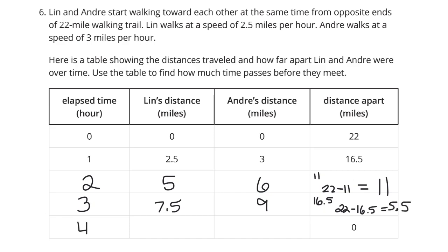And our fourth hour here happens to be our last row of the table. Add another 2.5, and we get 10 miles. Add another 3, and we get 12 miles. Add those up and we get 22 miles walked together. And of course, 22 minus 22 does equal that 0.